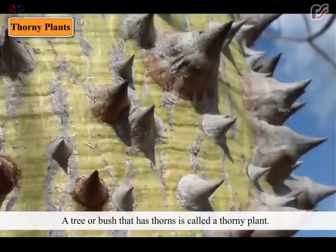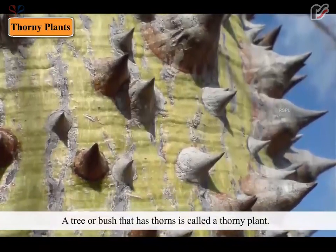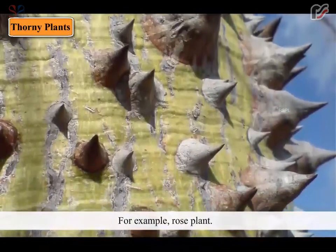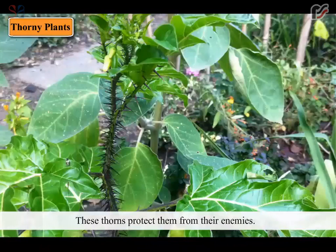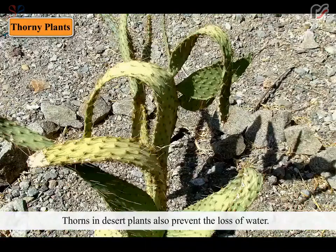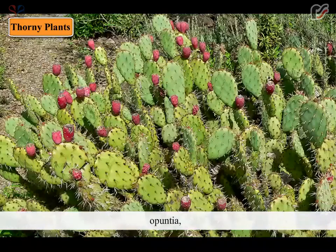A tree or bush that has thorns is called a thorny plant. For example, rose plant. These thorns protect them from their enemies. Thorns in desert plants also prevent the loss of water. For example, acacia, opuntia, cactus, etc.